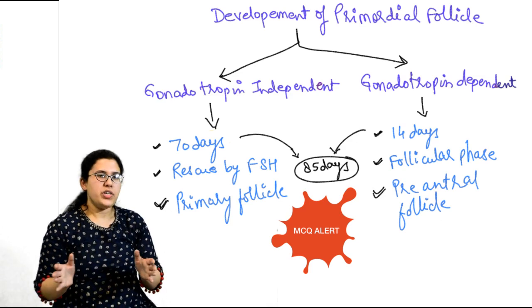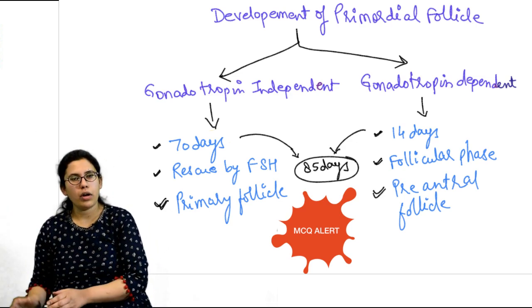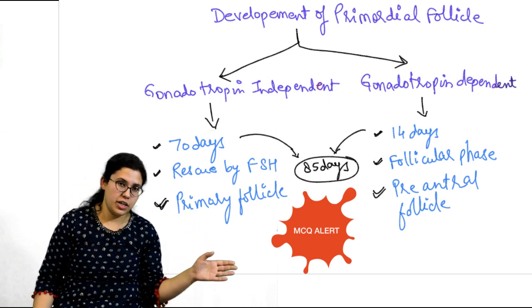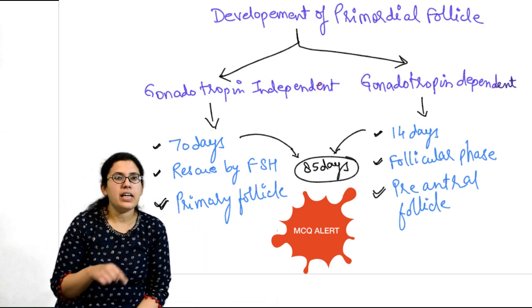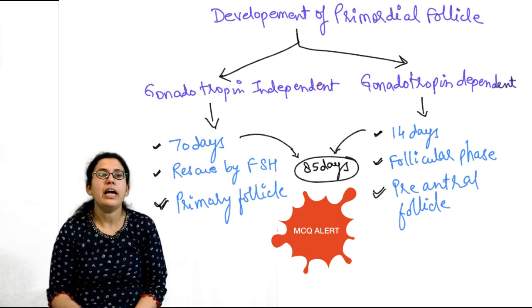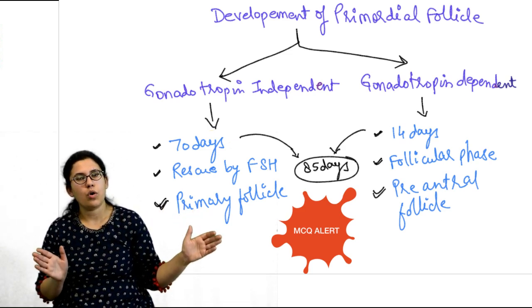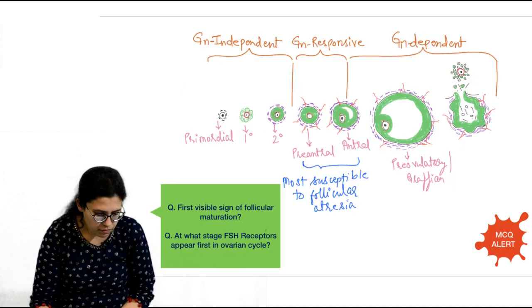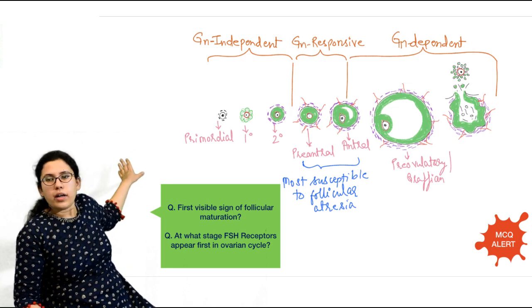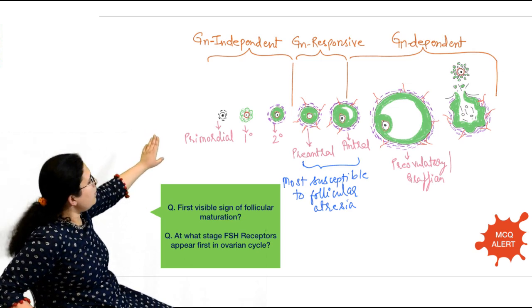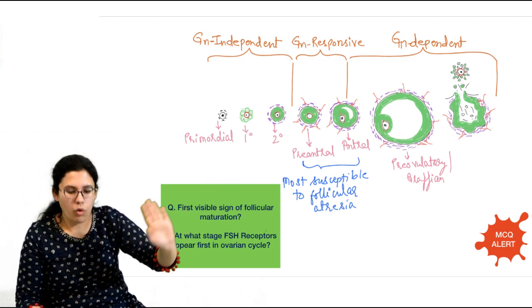If a question asks how many total days are required for a primordial follicle to attain a pre-ovulatory stage, the answer is 70 plus 15 days — around 85 days total. So the total duration of follicular maturation is 85 days. In the figure we can see: primordial follicle, then primary follicle, secondary follicle, pre-antral, antral, and pre-ovulatory follicle.